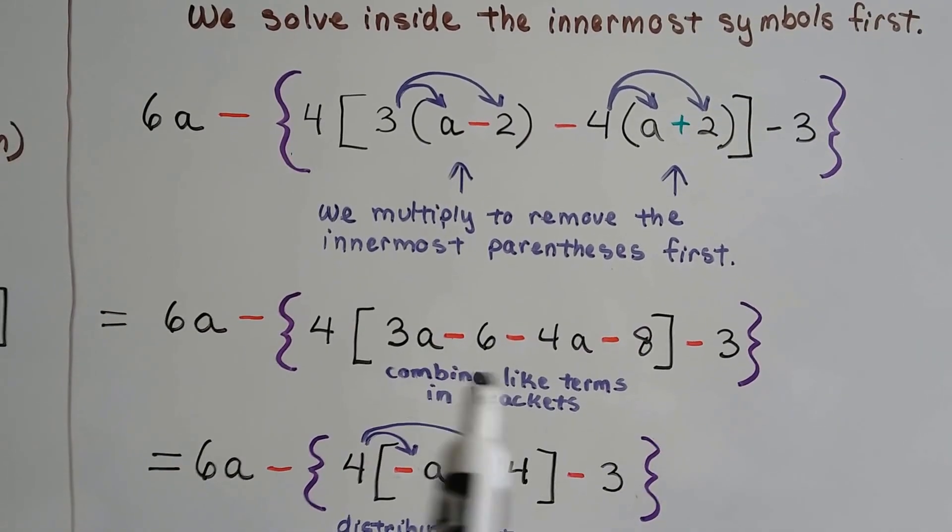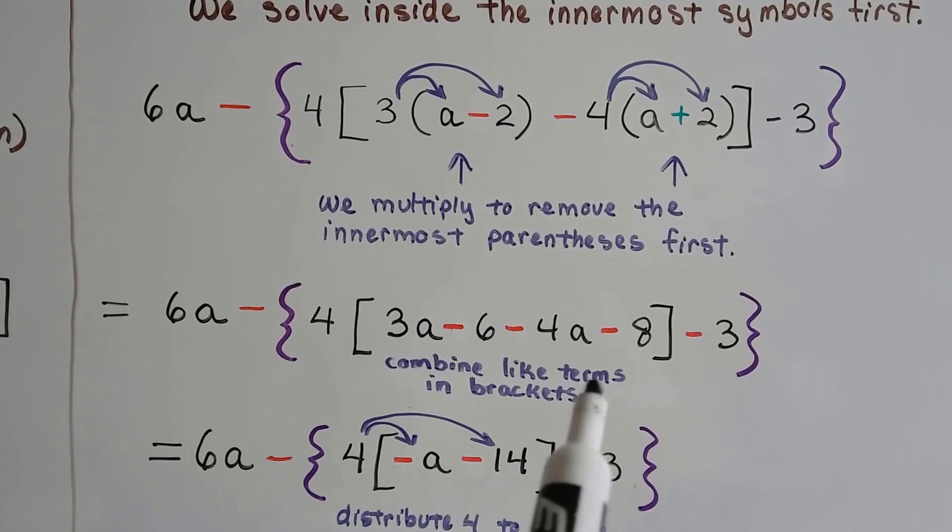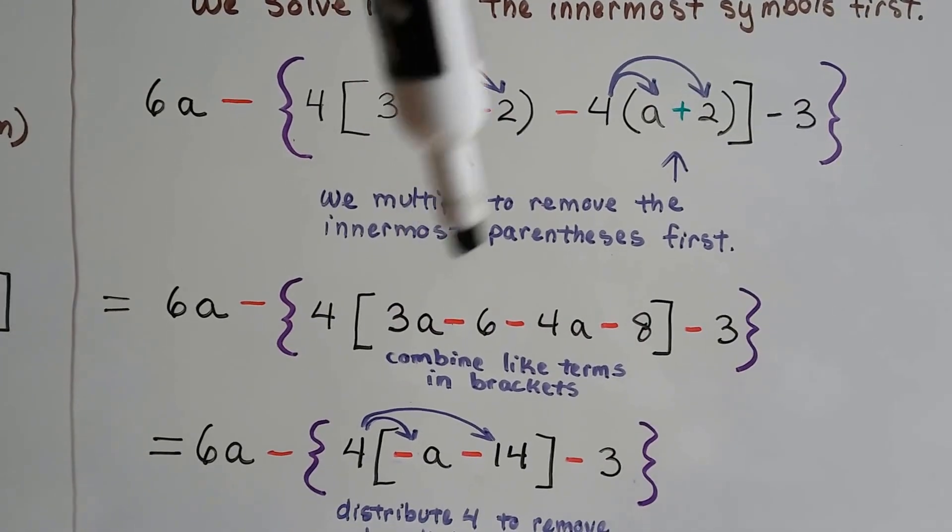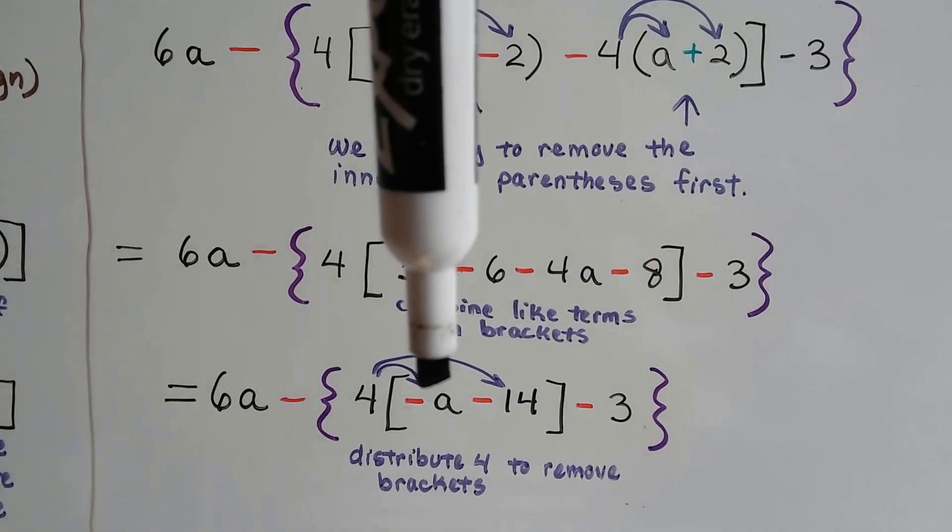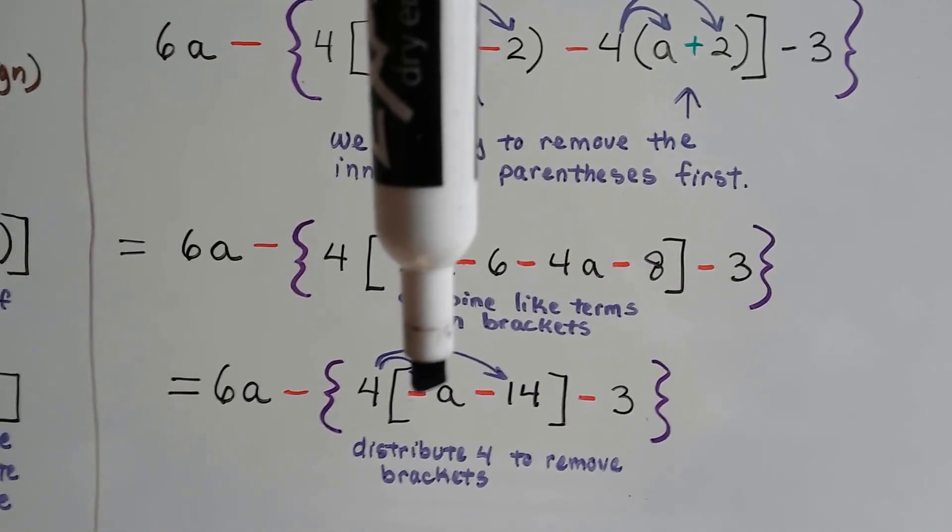So now we have the parentheses gone, and we can combine the like terms that are inside these brackets. We got a 3a and we got a 4a. Well, when you have a 3a and you take away a 4a, you get a negative 1a or a negative a, because we don't have to write that one, do we?